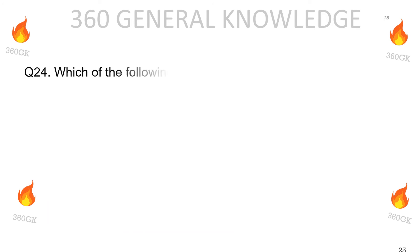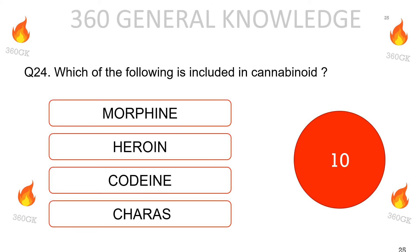Which of the following is included in cannabinoids: morphine, heroin, codeine, or charas? The correct answer is charas.